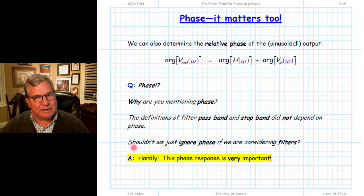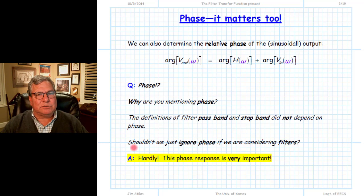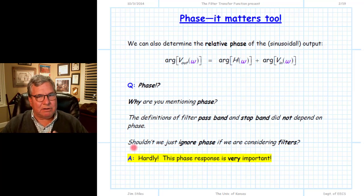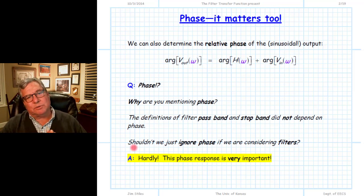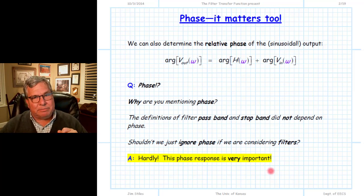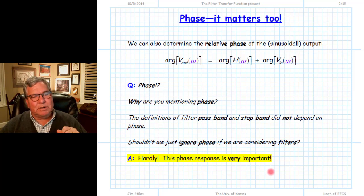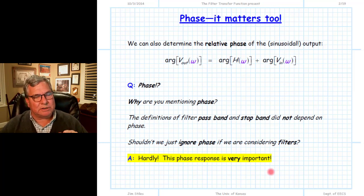You might ask: who cares about the phase shift in a filter? A filter's job is to reject signals in the stopband and allow signals in the passband to propagate through to the load. Does it matter that the phase is shifted in the process? It turns out the phase response is in fact very important in a bandpass filter — a fact that is not well appreciated by many electrical engineers. It's a rookie mistake to think phase doesn't matter. The phase response matters greatly, and if we're not careful we can specify a filter whose phase response is so poor that it becomes worthless.